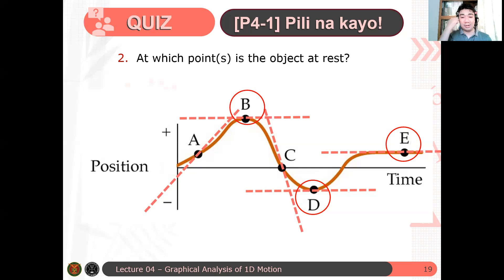Malinaw kung bakit ganon. Pag ang slope of the tangent line, this is just position time. If the slope of the tangent line for the position time graph is flat line or horizontal line, then the velocity at that point is zero. Questions?